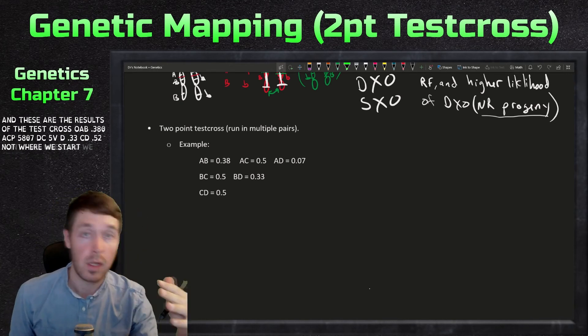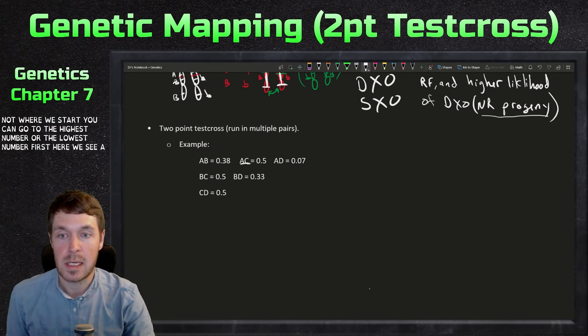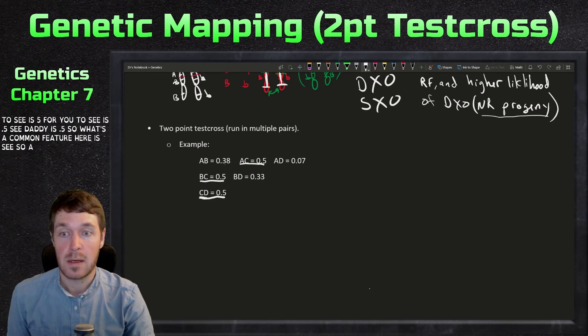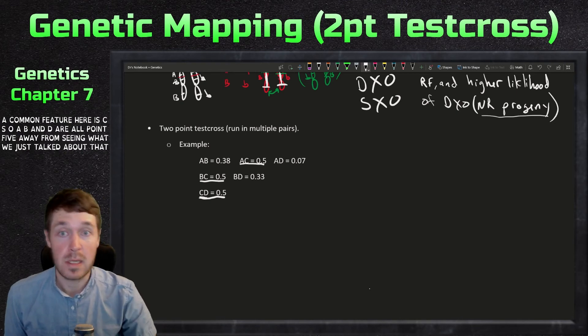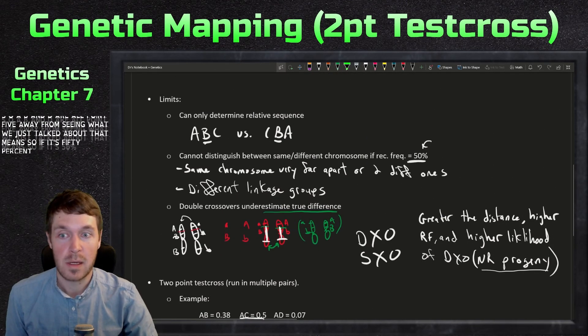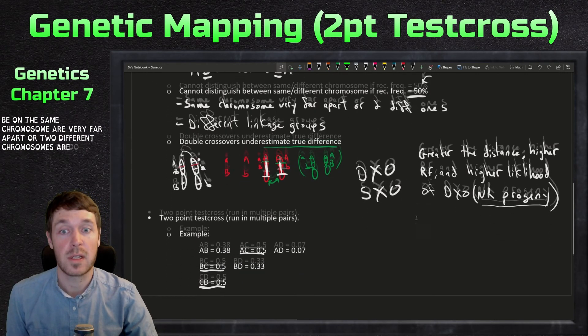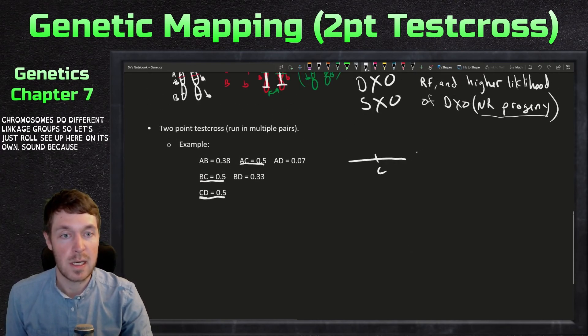So now where do we start? You can go to the highest number or the lowest number first. Here we see A to C is 0.5, B to C is 0.5, C to D is 0.5. So what's the common feature here is C. So A, B, and D are all 0.5 away from C. And what did we just talk about? That means, so if it's 50%, could be on the same chromosome or very far apart or two different chromosomes. So different linkage groups.